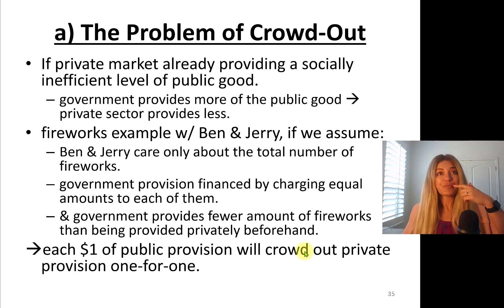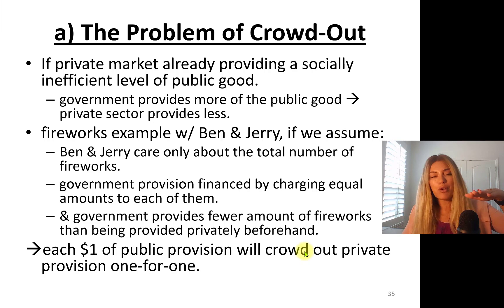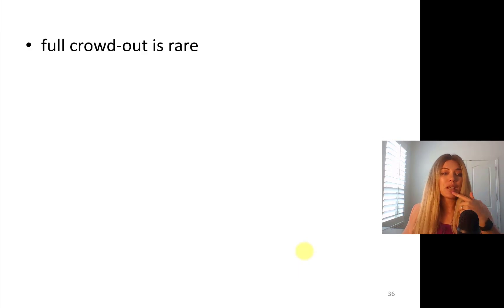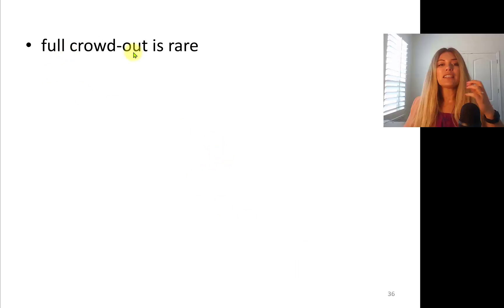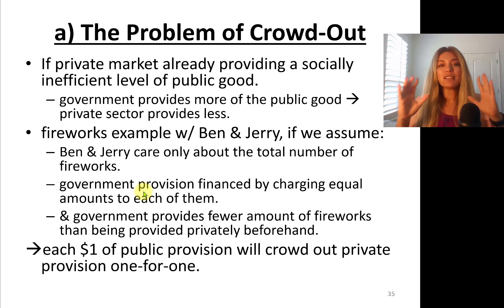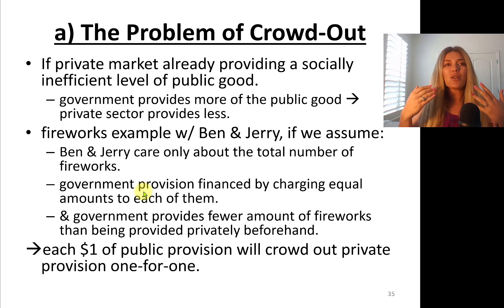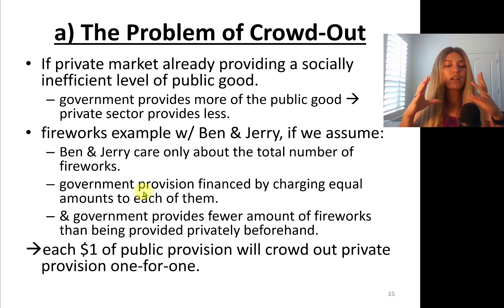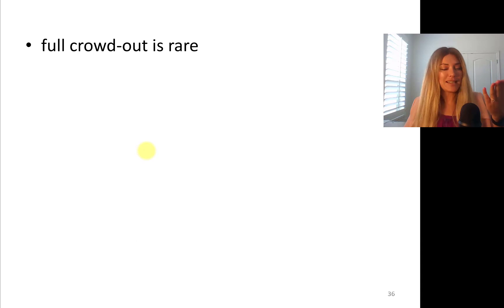So if government provides the half-million dollar firework show, I would stop providing mine — the good is already there. Full crowd out is rare though. One-for-one crowd out is rare. Partial crowd out is common. For instance, if government provides $200,000 worth of fireworks, I might cut down by $200,000 but still provide $300,000 worth myself. Full crowd out is what theory predicts, but it's rare in practice.